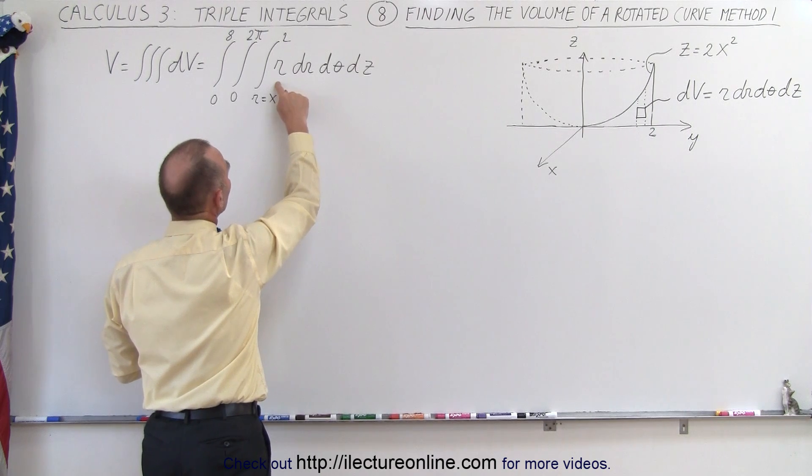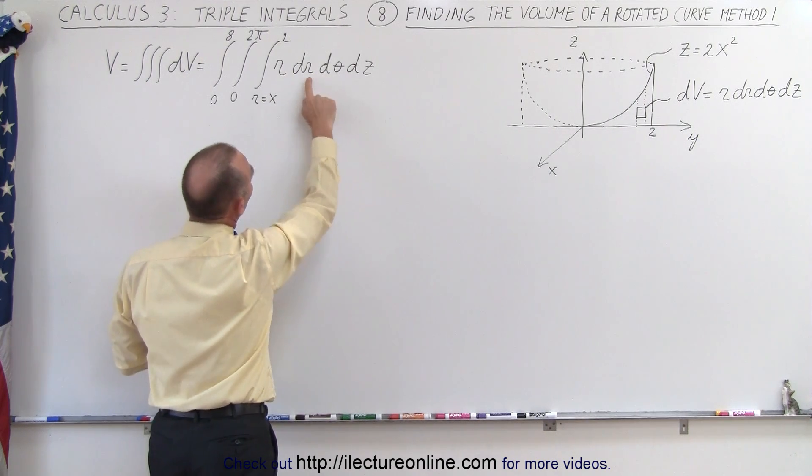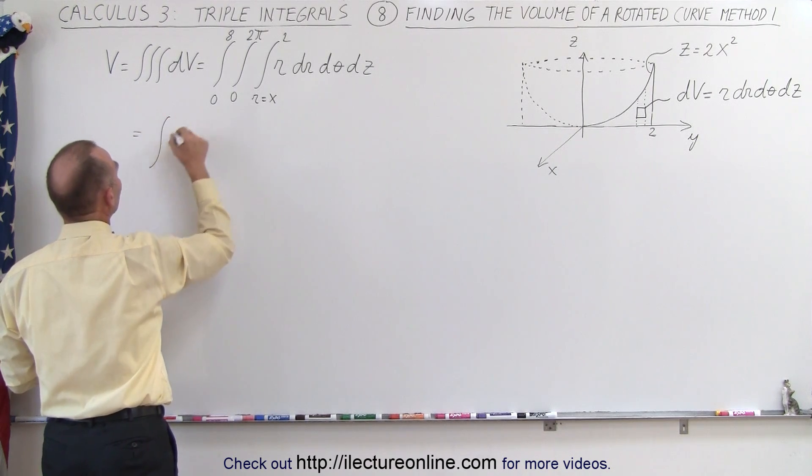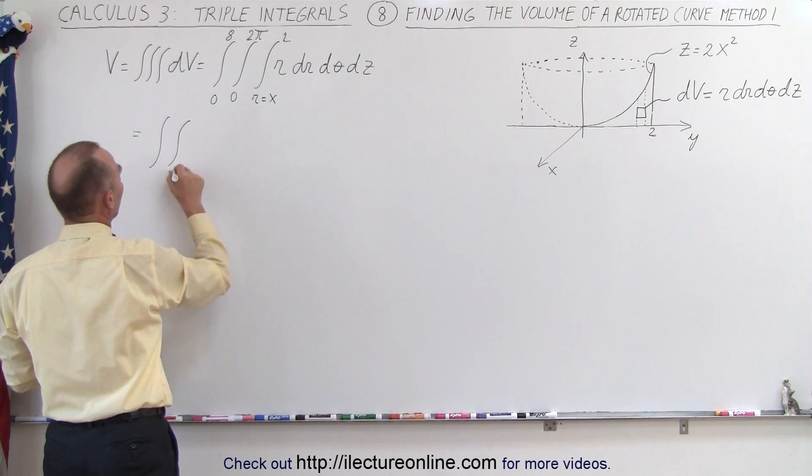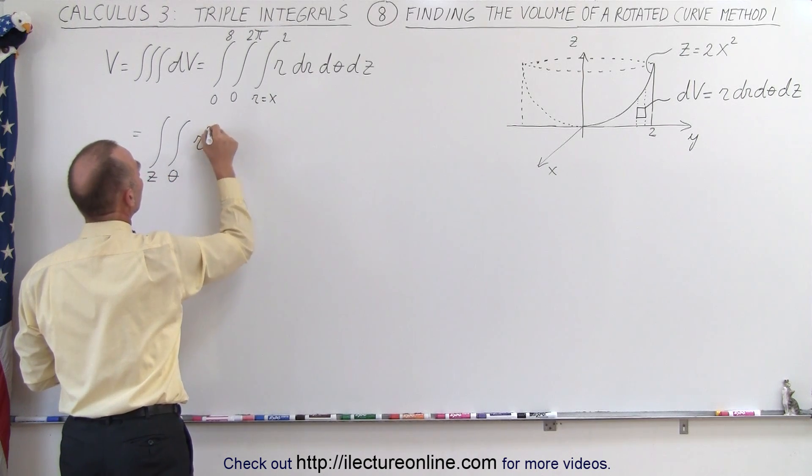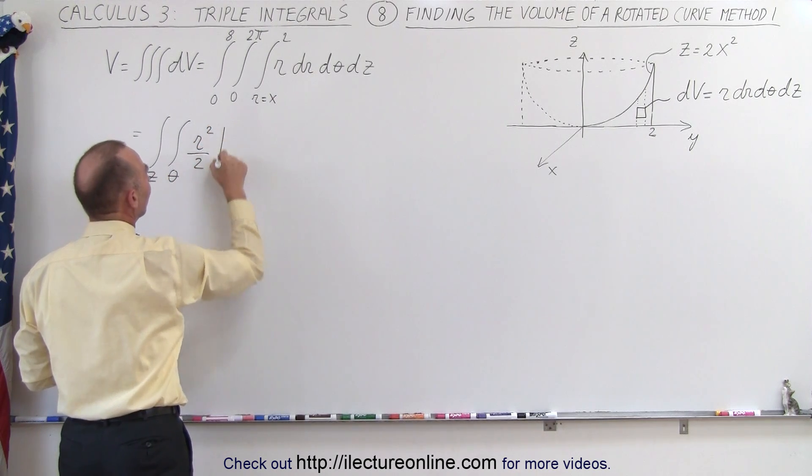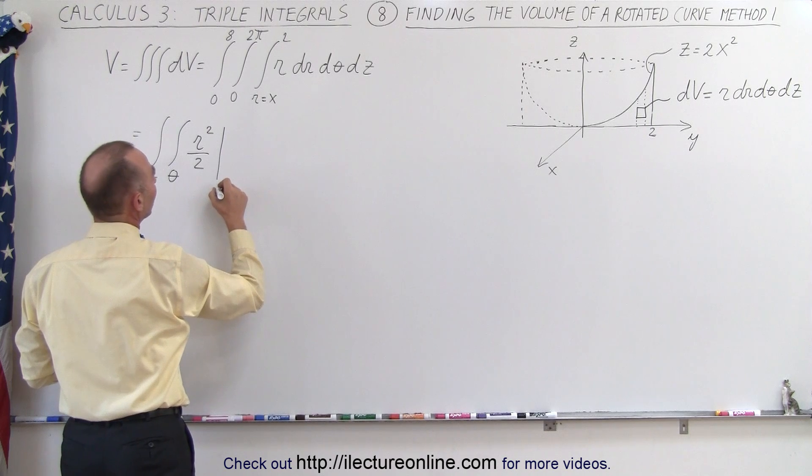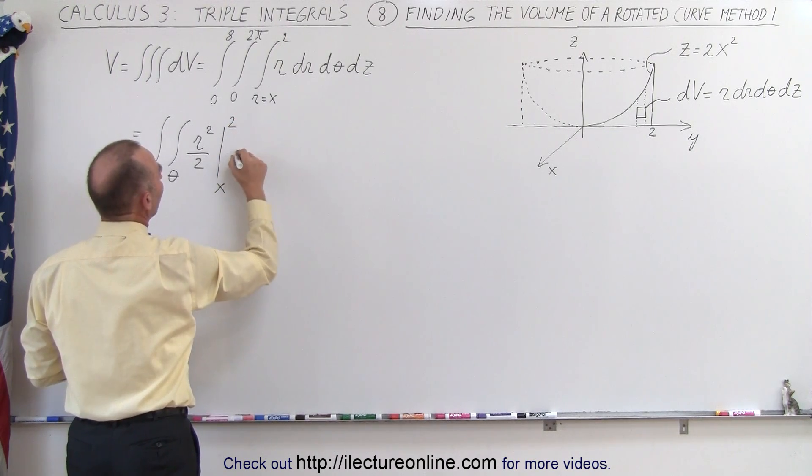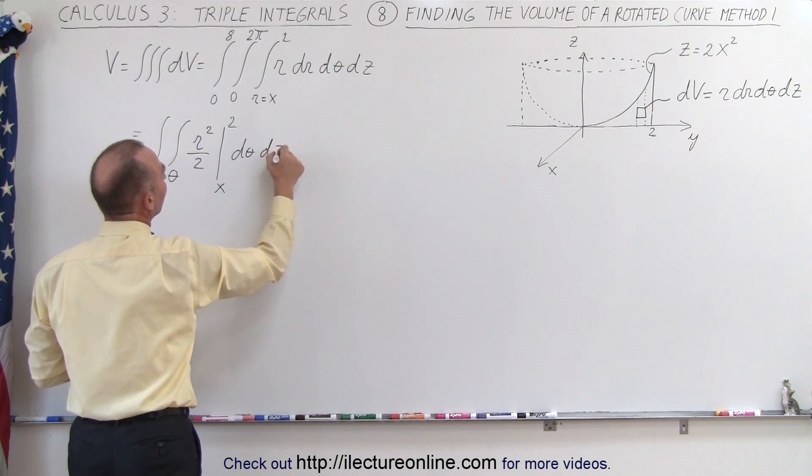Starting with our first integral, we're going to integrate r dr first, so this becomes equal to—we still have the two other integrals left over θ and over z—but r now becomes r squared over 2 evaluated from r equals x to r equals 2, and we still have a dθ and a dz left.